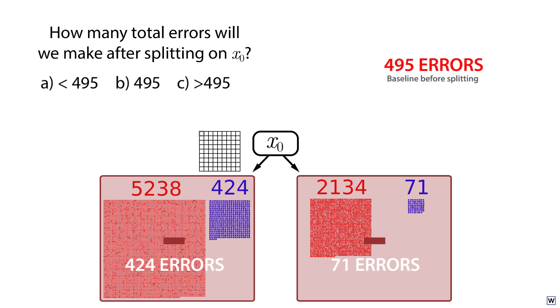If we add together the number of misclassifications in our left and right nodes, we get 495. So the total number of misclassification errors remained exactly the same after splitting on our upper left variable x0. Not a great outcome.